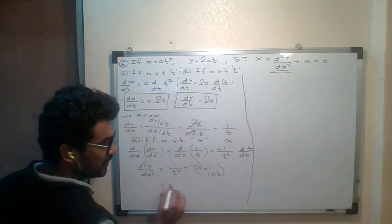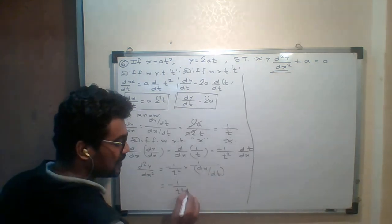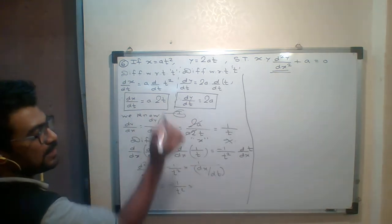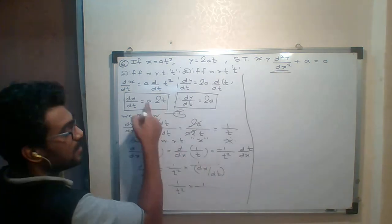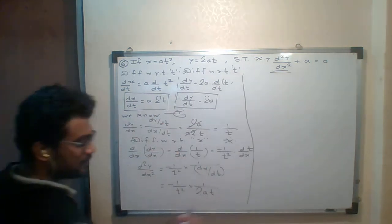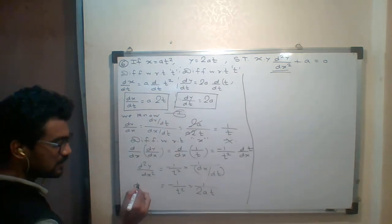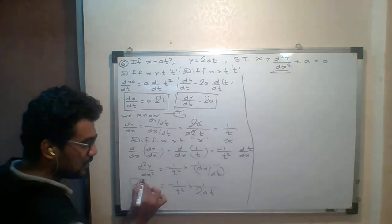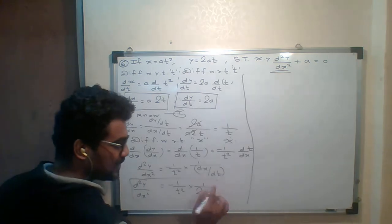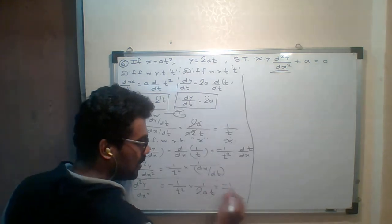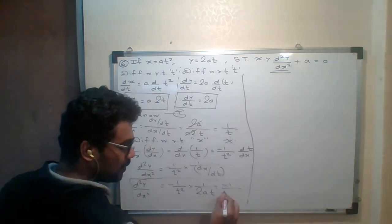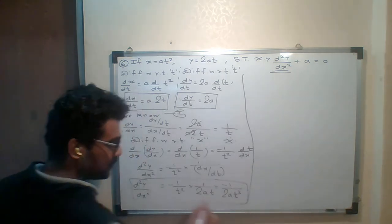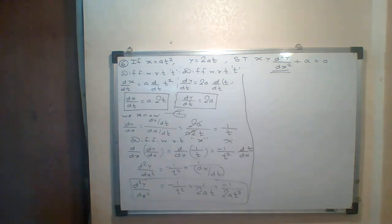I did this because I have the value of dx/dt from step 1. The value of dx/dt is 2at. So substituting, d²y/dx² equals minus 1/t² times 1/(2at), which simplifies to minus 1 upon 2at³, since t times t² equals t³.